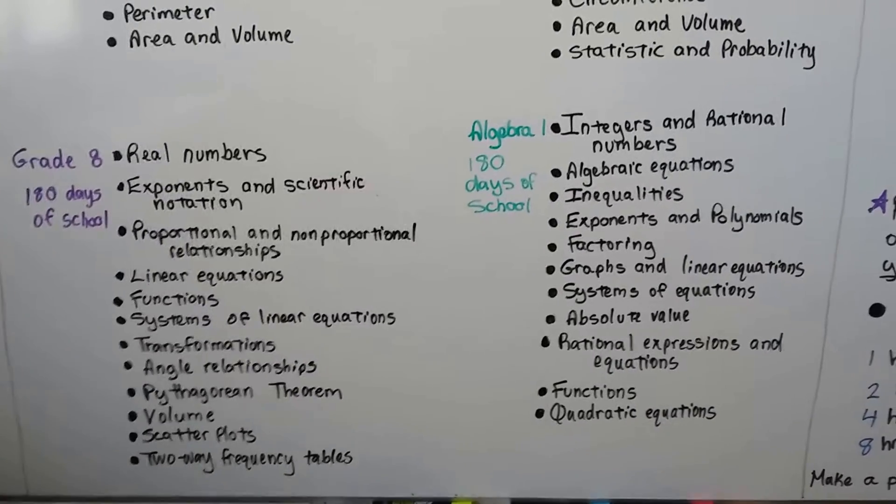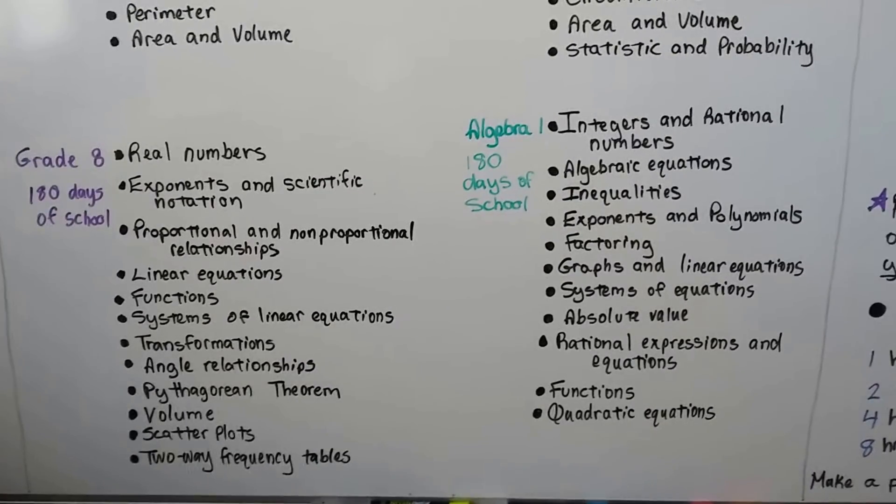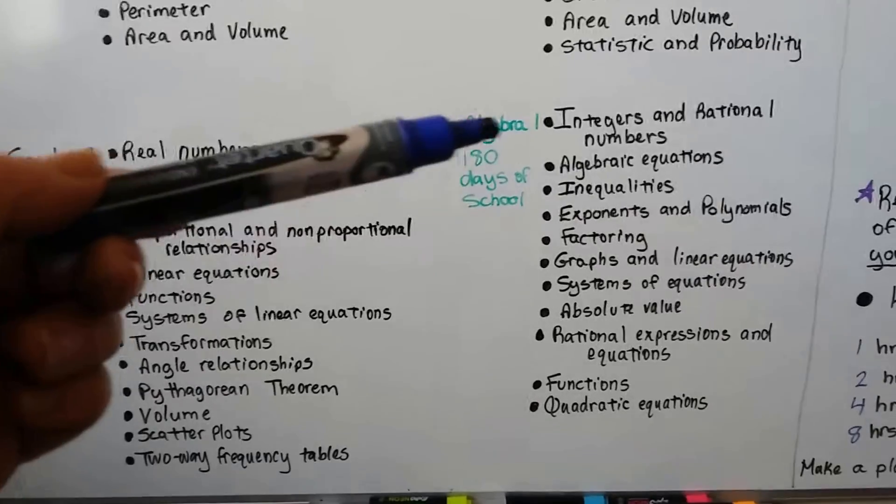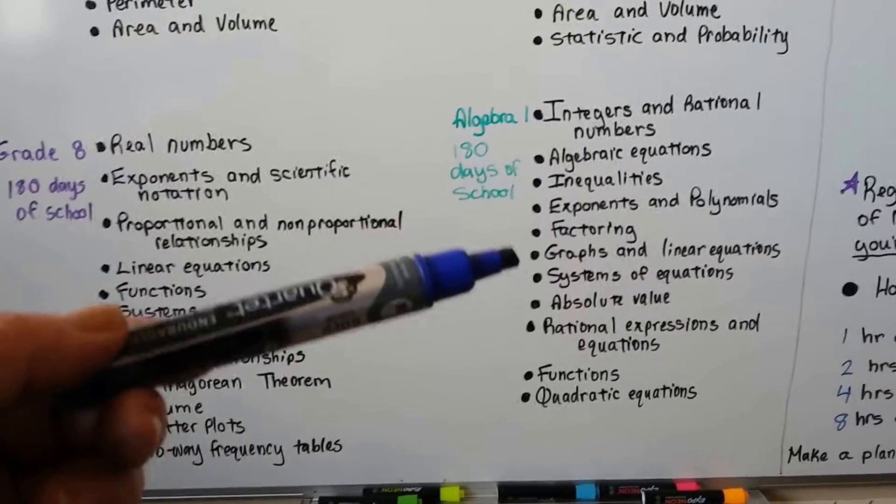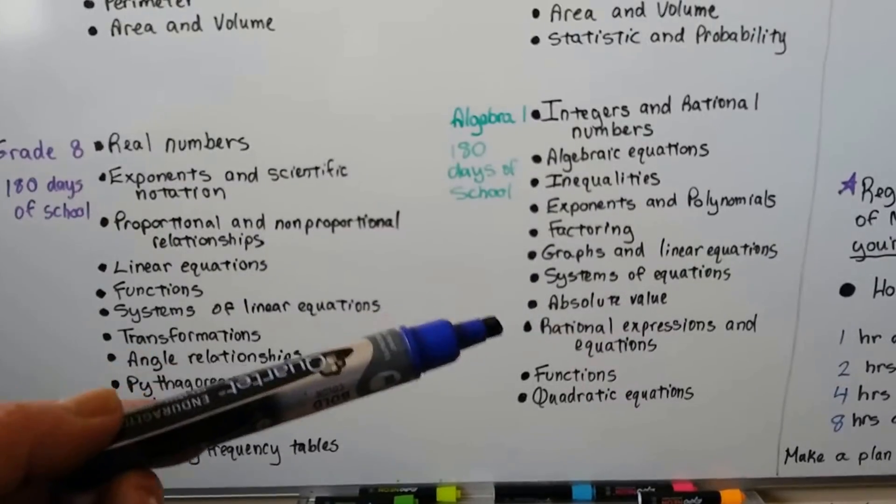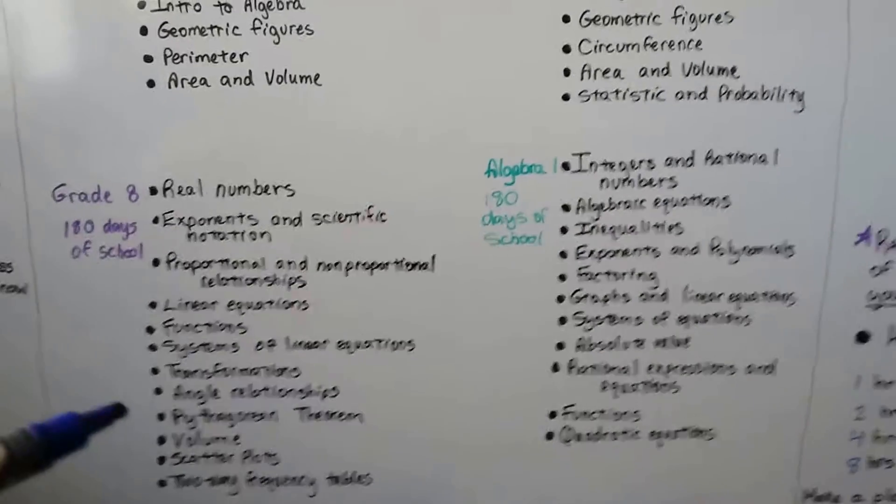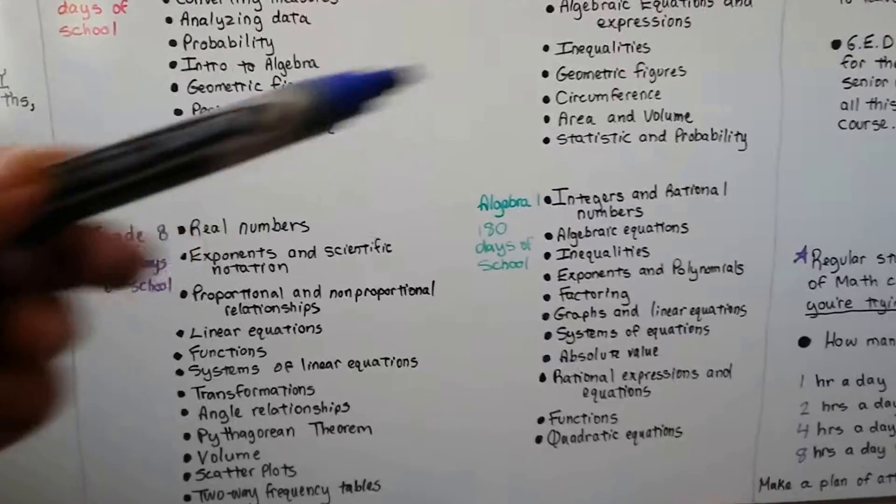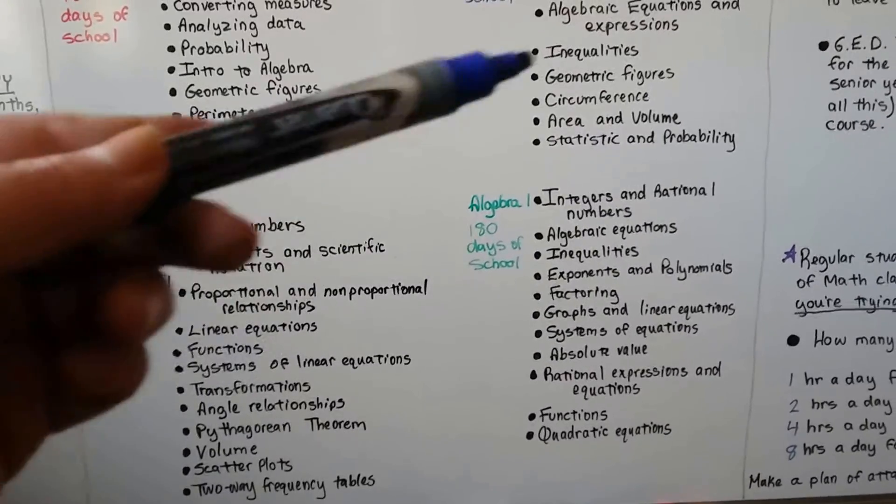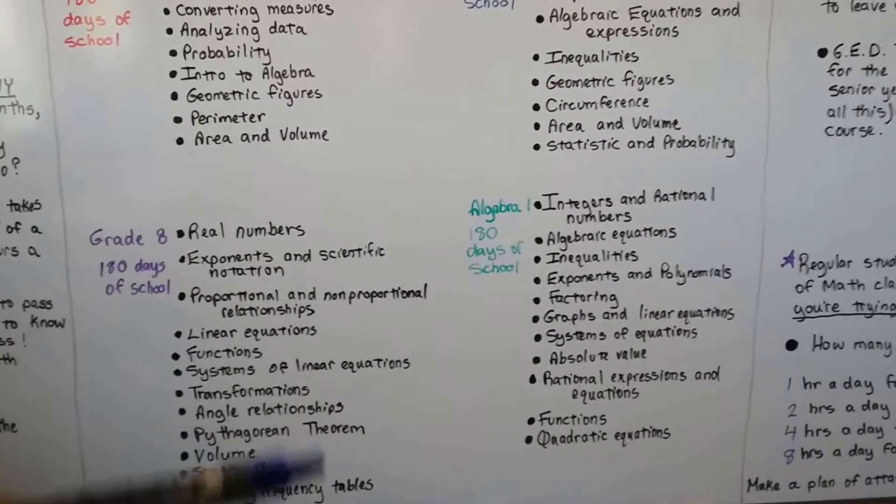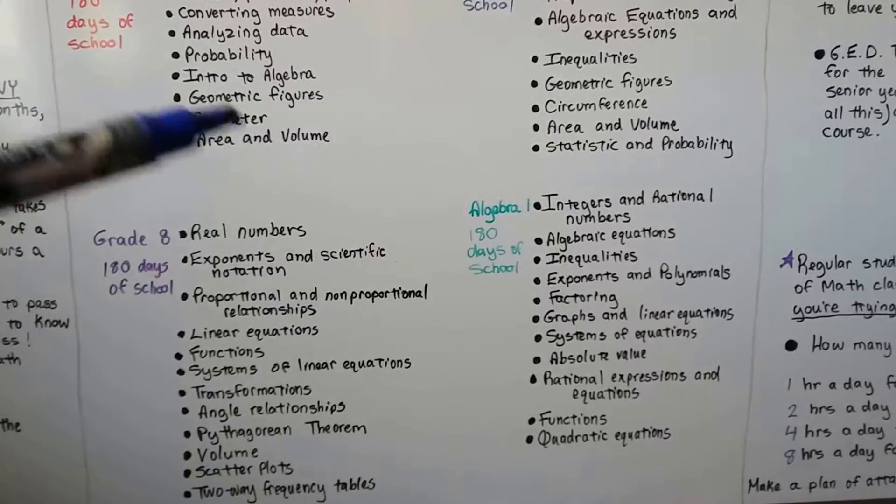And then for algebra one in ninth grade, they've got another 180 days of school. And look, rational numbers, equations, inequalities, factoring, systems of equations, absolute value, functions again, quadratic equations. And if you notice, there's going to be repeats. So it'll say inequalities here and inequalities here or area and volume, area and volume, volume.